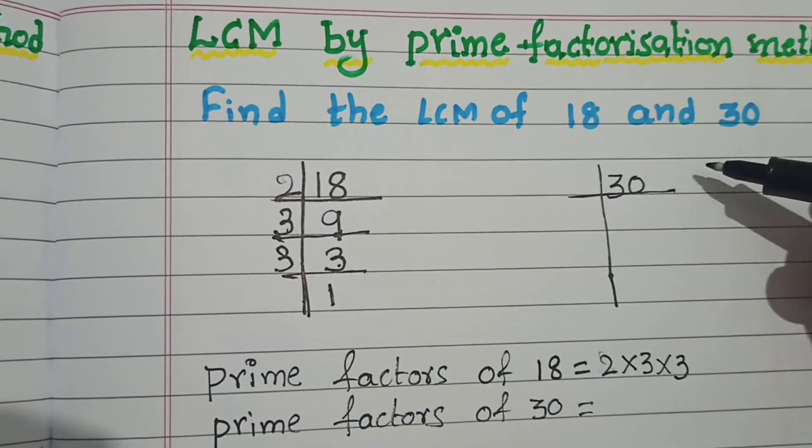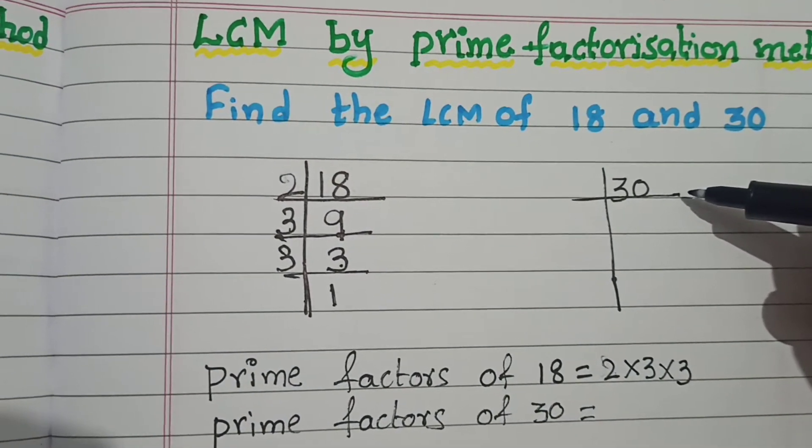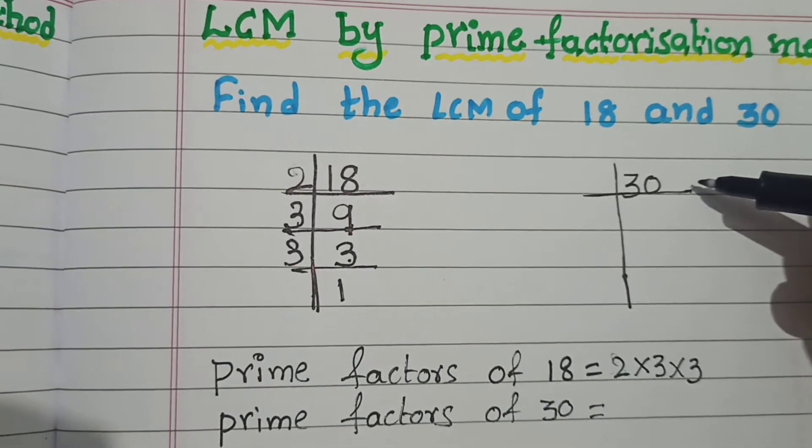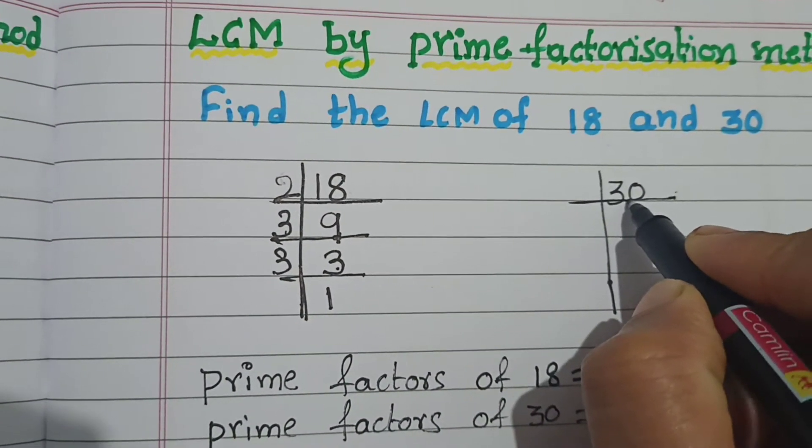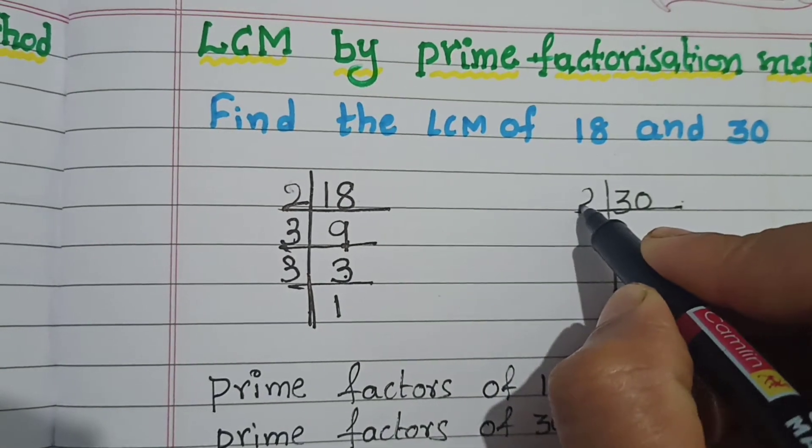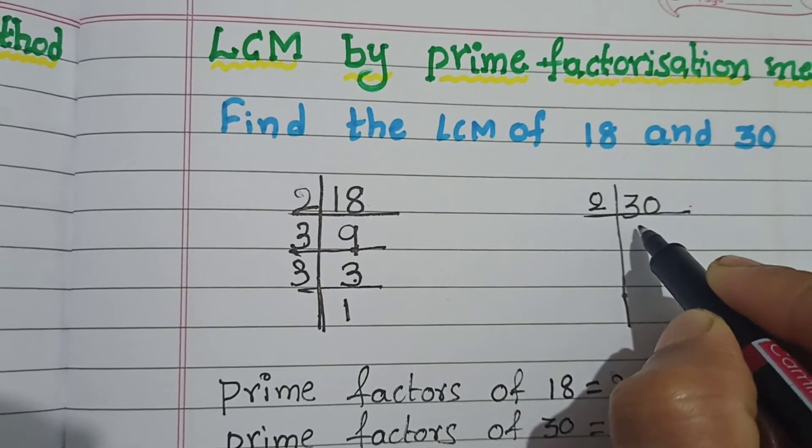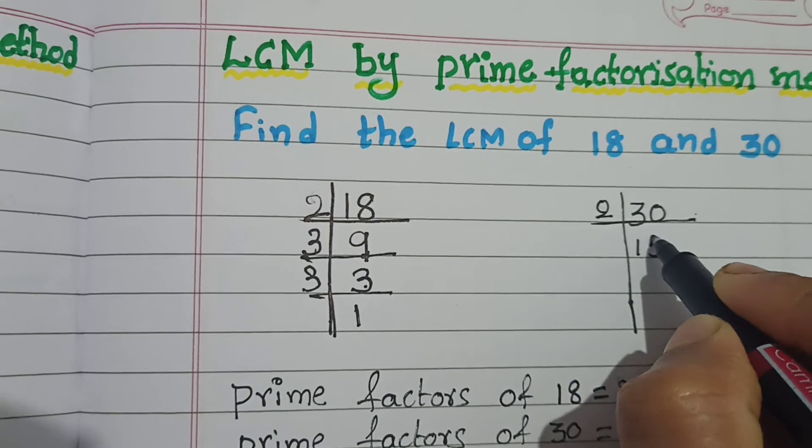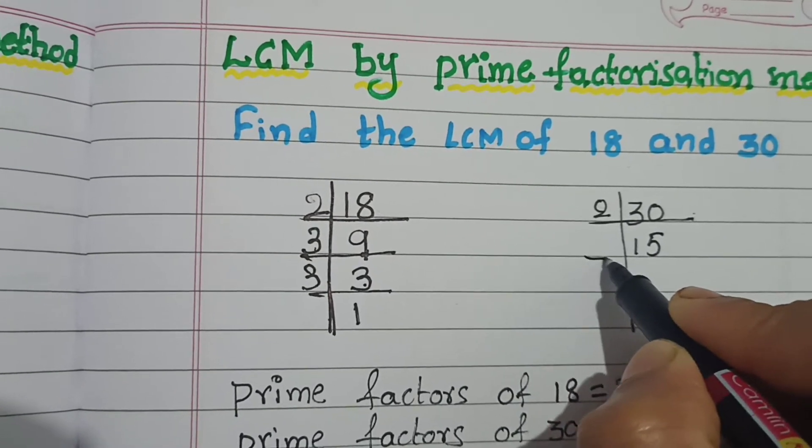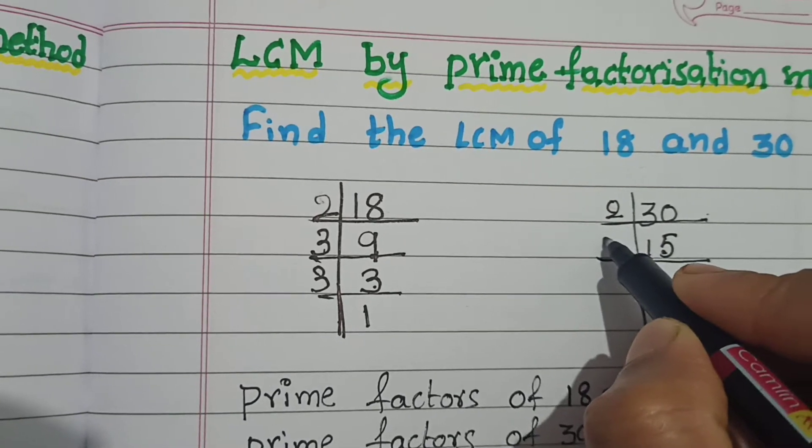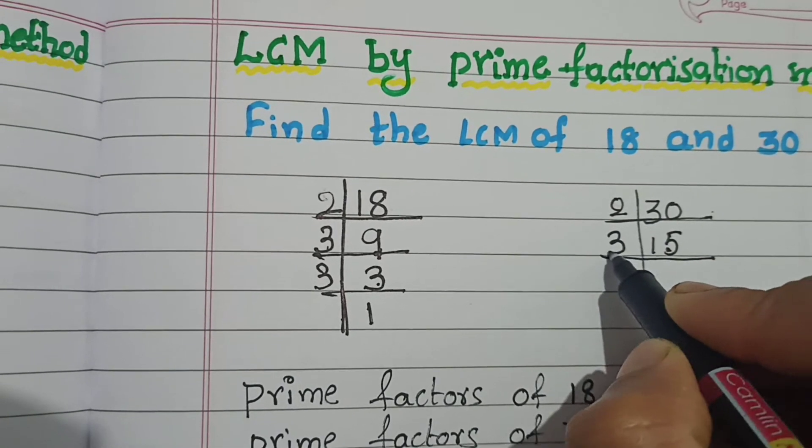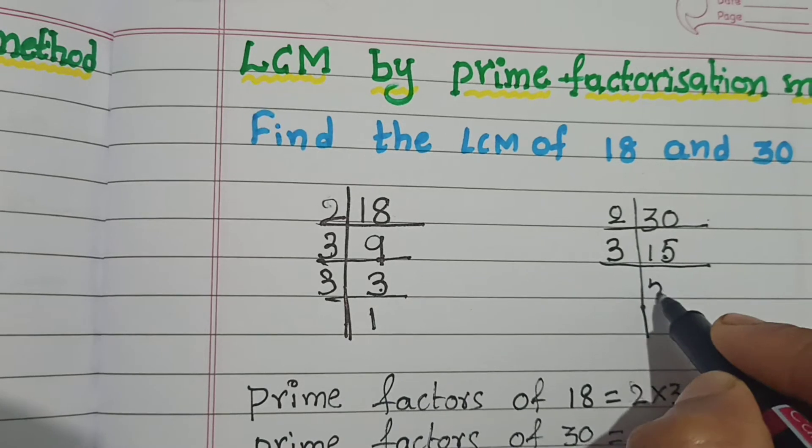Now factorize 30 by prime numbers only. Least possible prime number is 2. Is it divisible by 2? Yes, it is divisible by 2. 2 fifteens are 30. Next, again divide 15. It is not divisible by 2. Then go for next prime number. Next prime number is 3. 3 fives are 15.